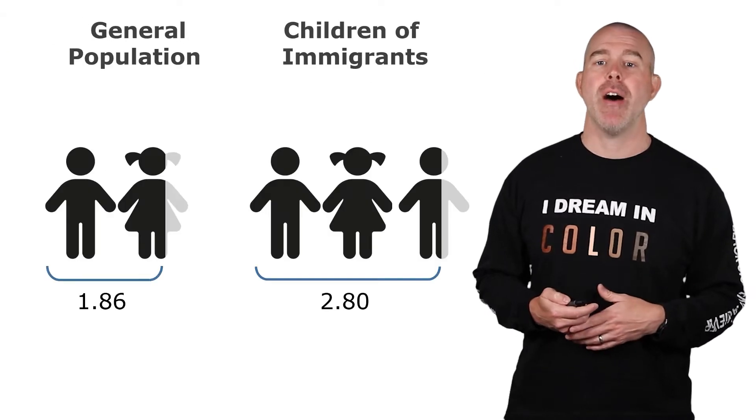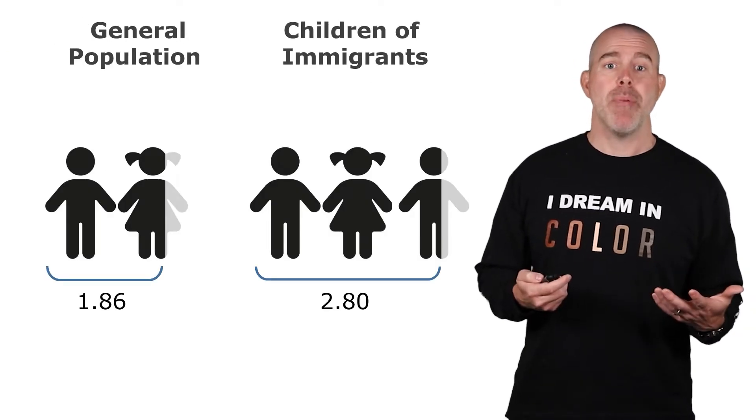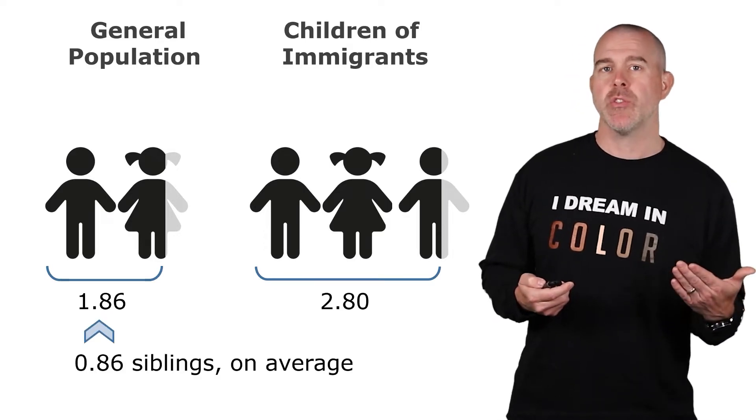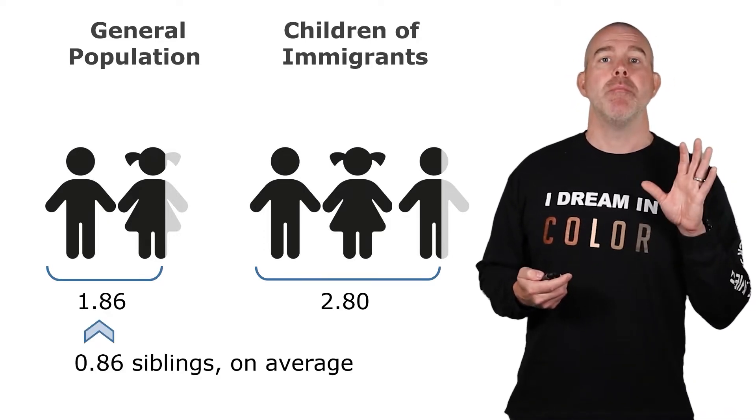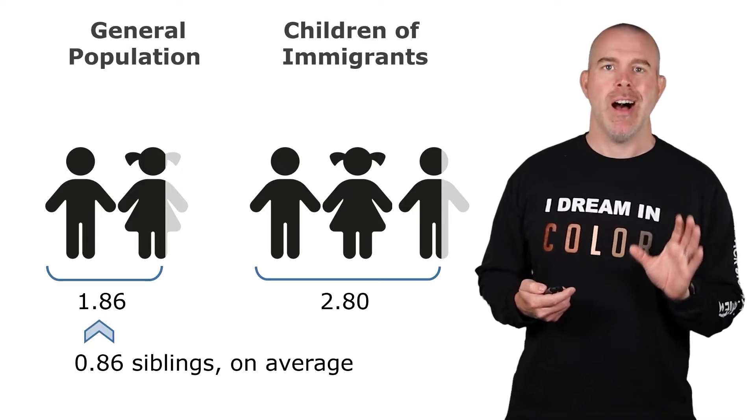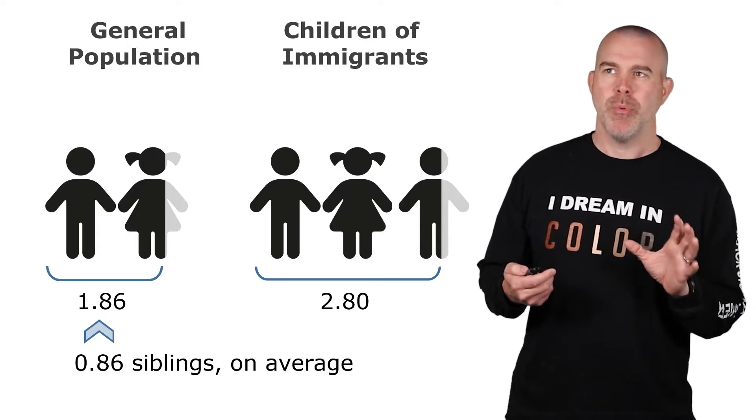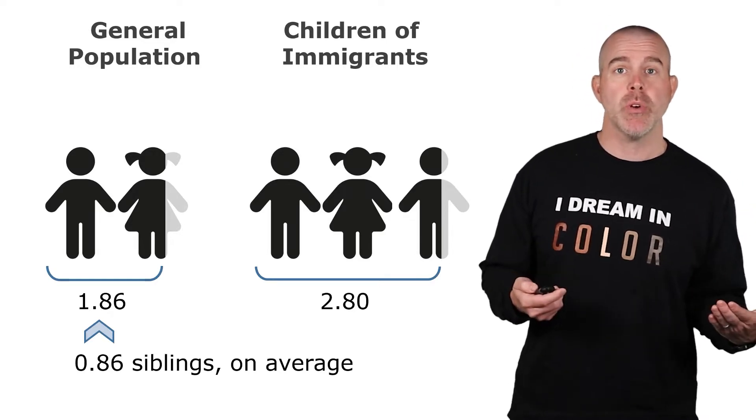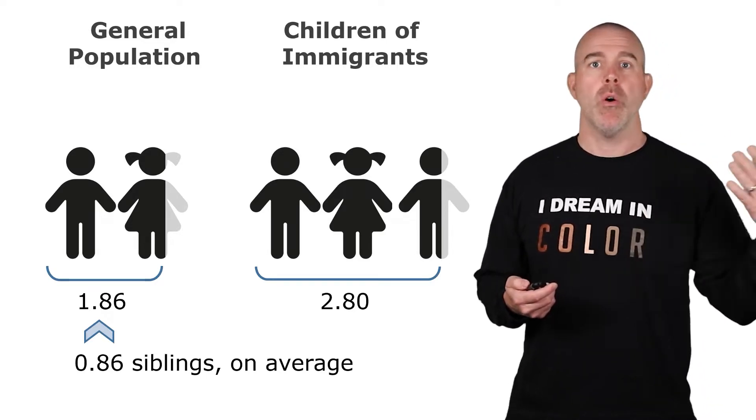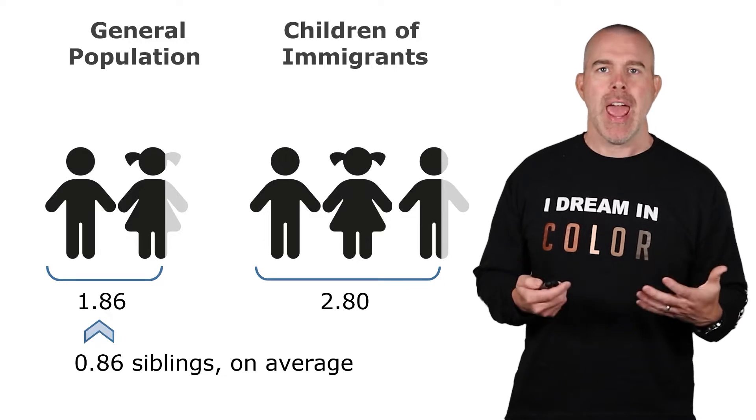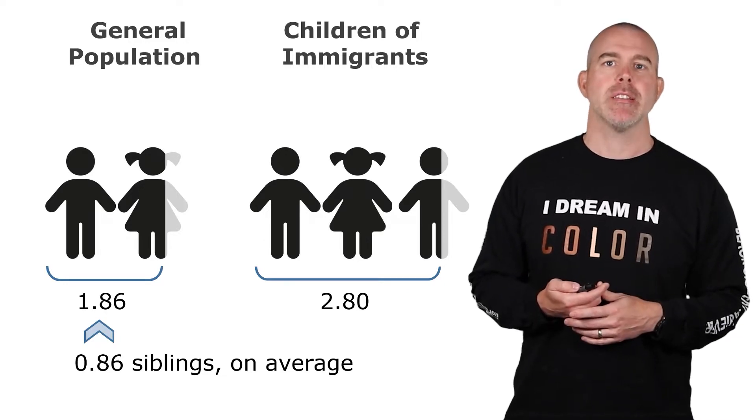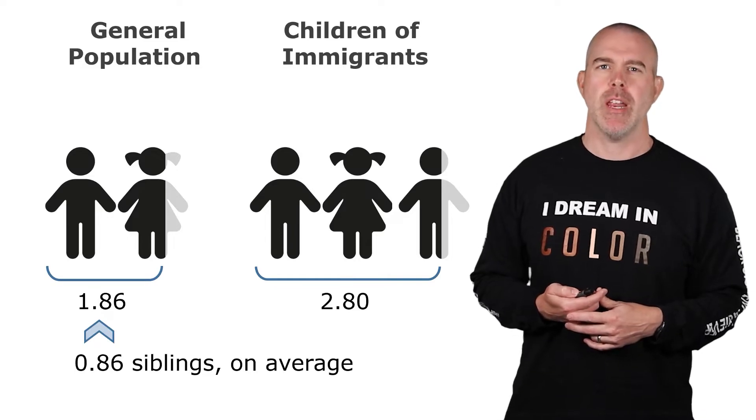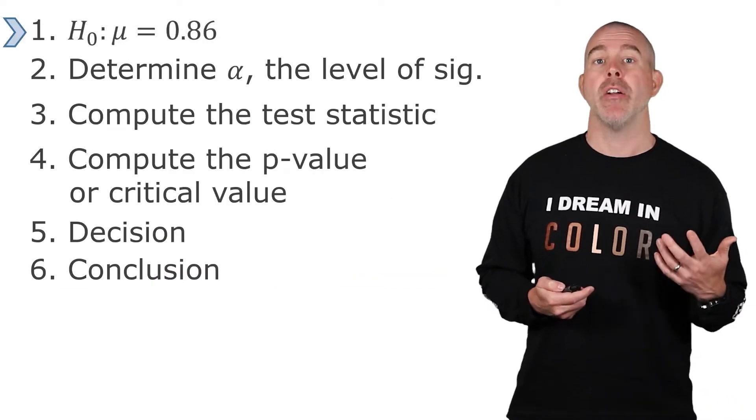Define the null and alternative hypotheses. Well, the null hypothesis, we're going to look at number of siblings. So the null hypothesis will be that on average there is 0.86 siblings on average. Seems kind of weird to have 0.86 of a sibling, but you know what I mean. This is an average. Some will be only children. Some will have two or three or only one. So this is on average. You'll have 0.86 siblings. And we're doing siblings because that's what we have in our children of immigrants database. So that is going to be our null hypothesis.